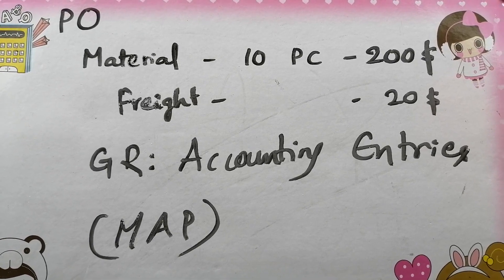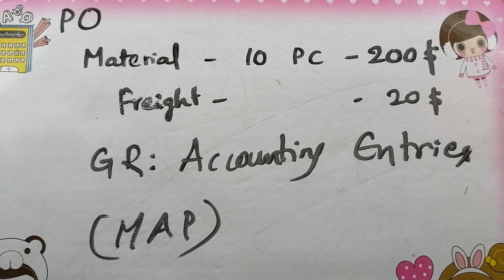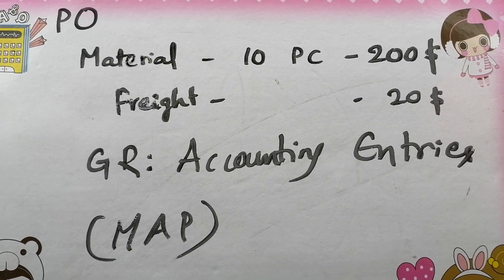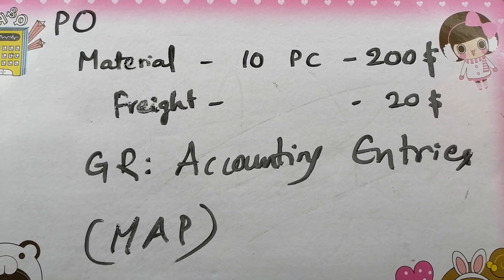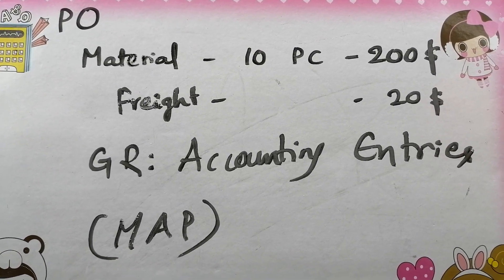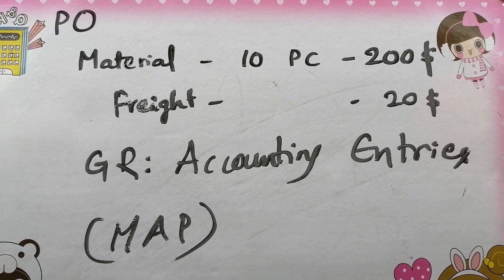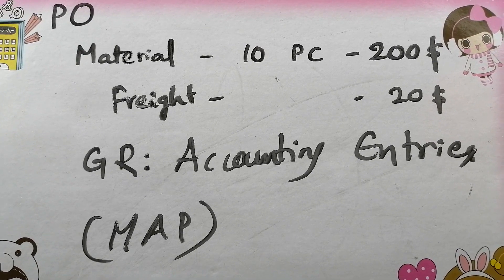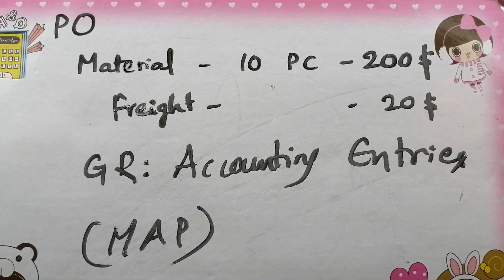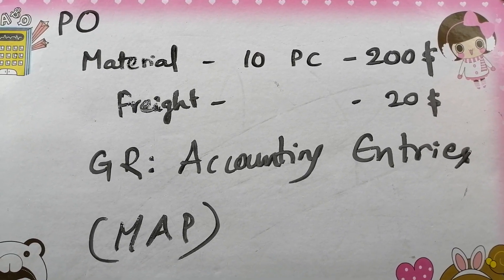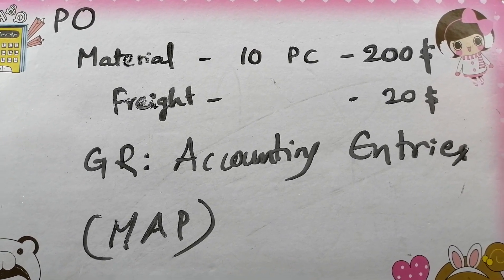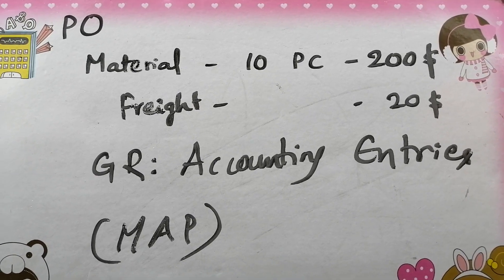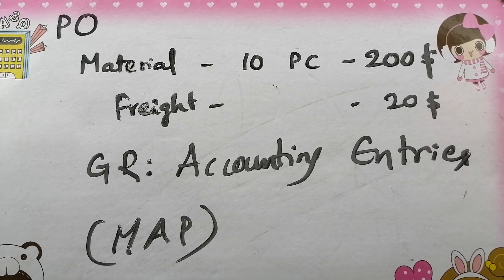I am highlighting Moving Average Price because if it is Standard Price, the accounting entries will have a price difference or additional entries based on the difference between the material master price and the PO price. That's why I'm highlighting Moving Average Price, so you don't have to confuse with any other conditions.